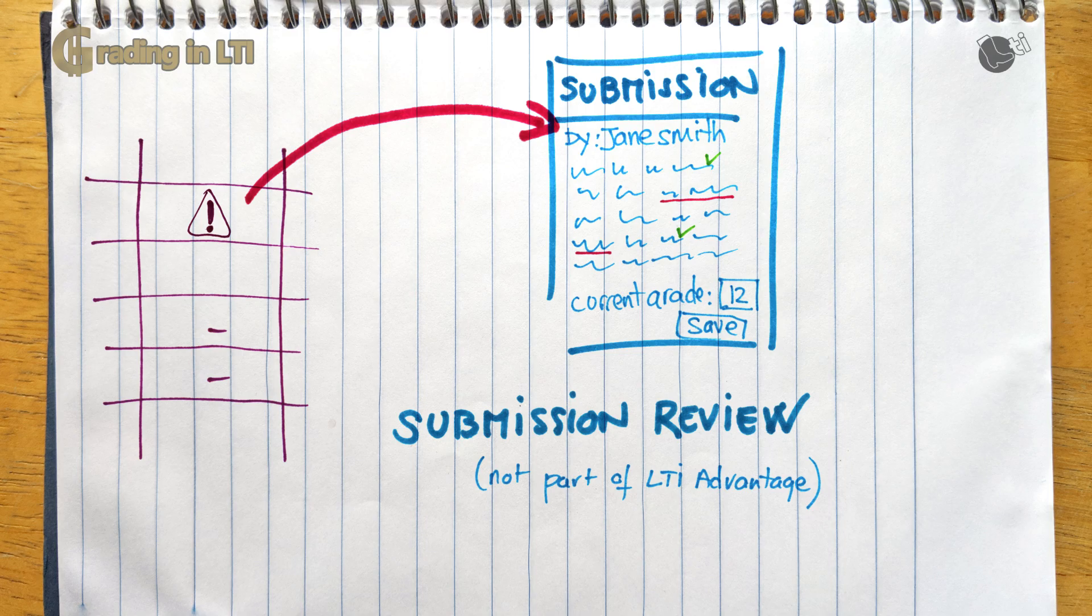A warning first, at the time of this recording, this specification is not yet public and it has not yet been implemented by most of the major learning platforms out there. Nonetheless, it's simply something that will become available soon and I mention it because it so well complements the assignment and grade service by adding a UI flow aspect to it. So with the submission review, you can click on the grade, the user is launched back in the tool. The LTI message for that launch is a new type of LTI message called submission review and it contains the line item and the user to grade for which this launch is made for. So this allows the tool to jump directly to that user submission.